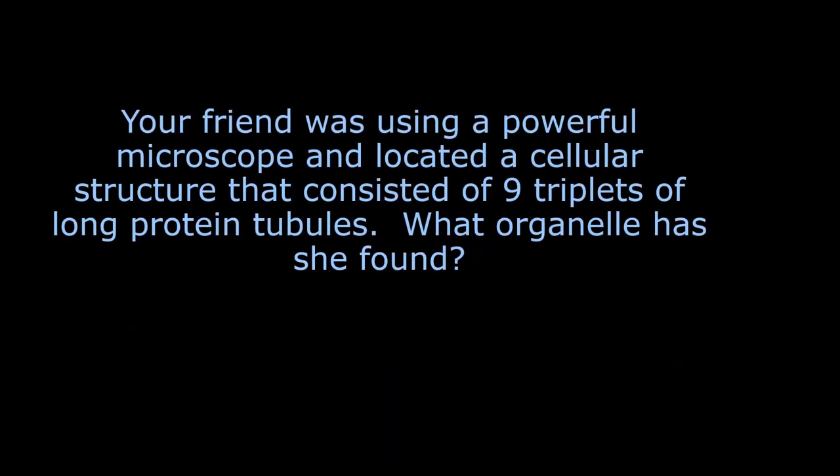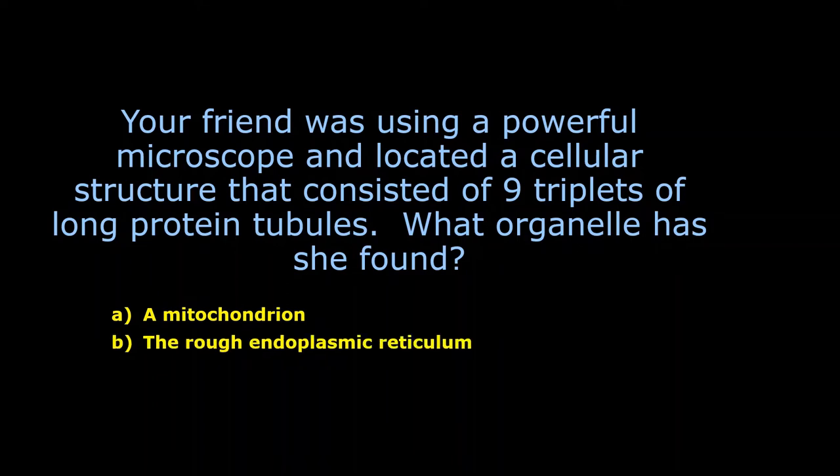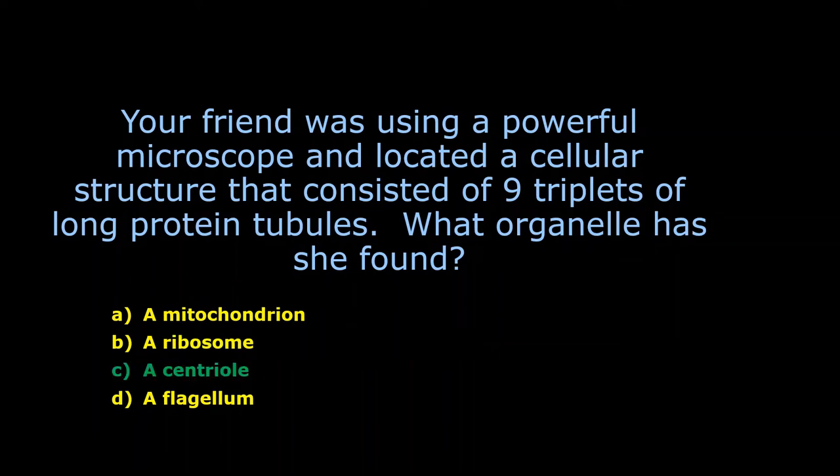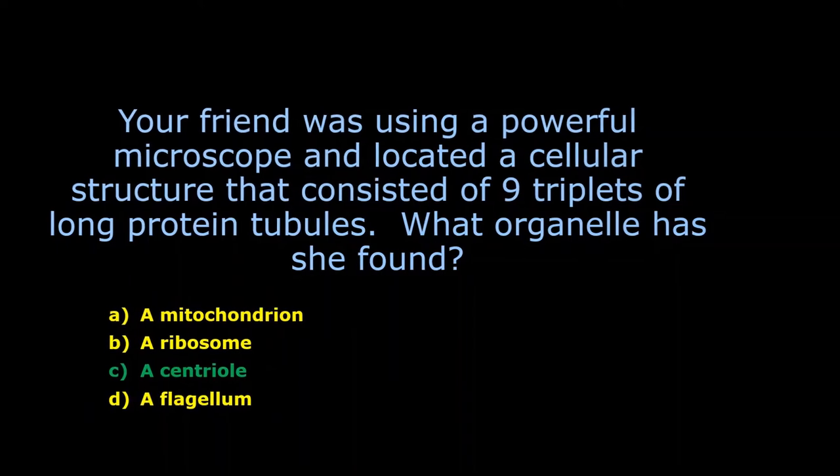Your friend was using a powerful microscope and located a cellular structure that consisted of nine triplets of long protein tubules. What organelle has she found? Nine by three. It's not a mitochondrion. What are we talking about here? A centriole, right? Rough ER looks nothing like that. There's our centriole. There's my answer. A flagellum? No, that's not a nine triplet. So centriole is our answer.